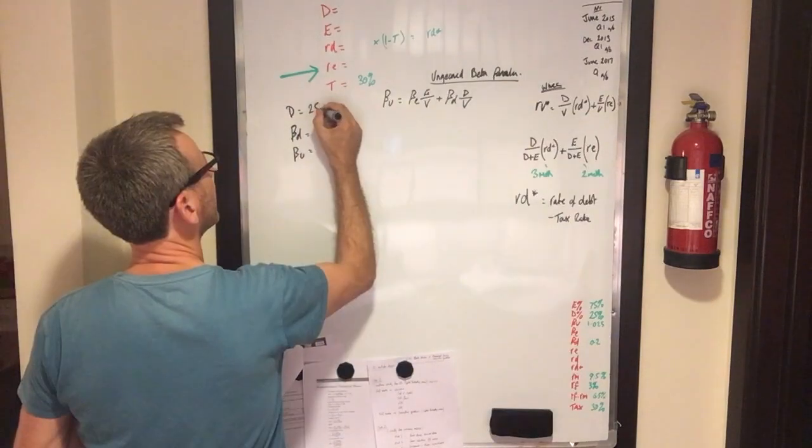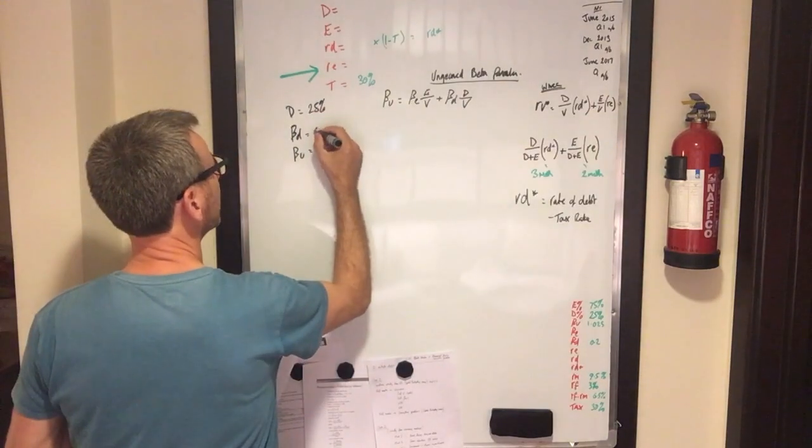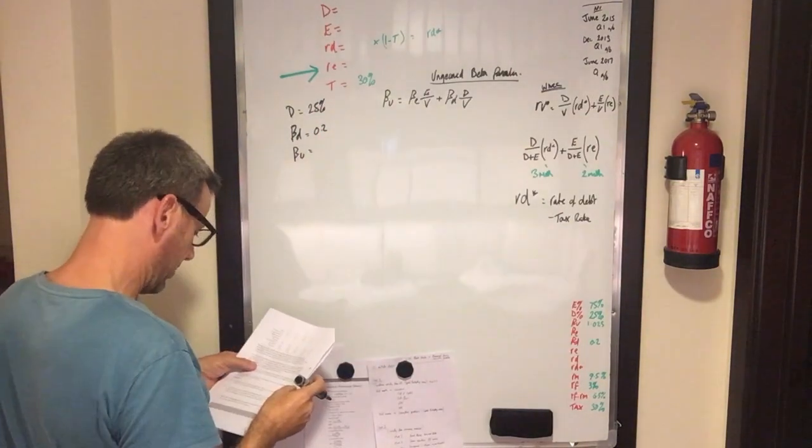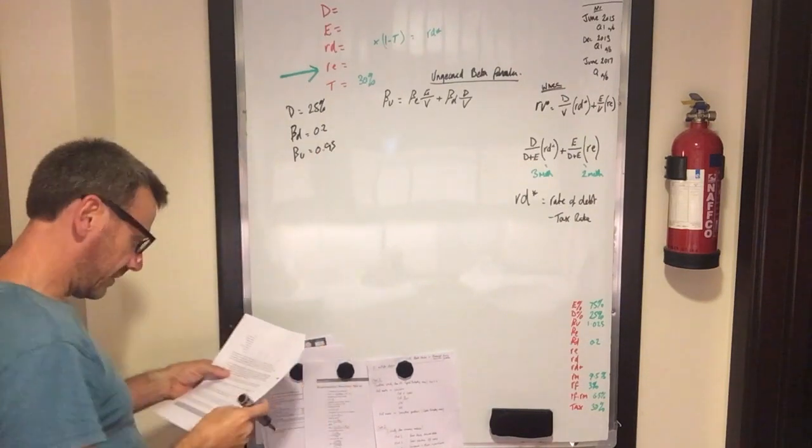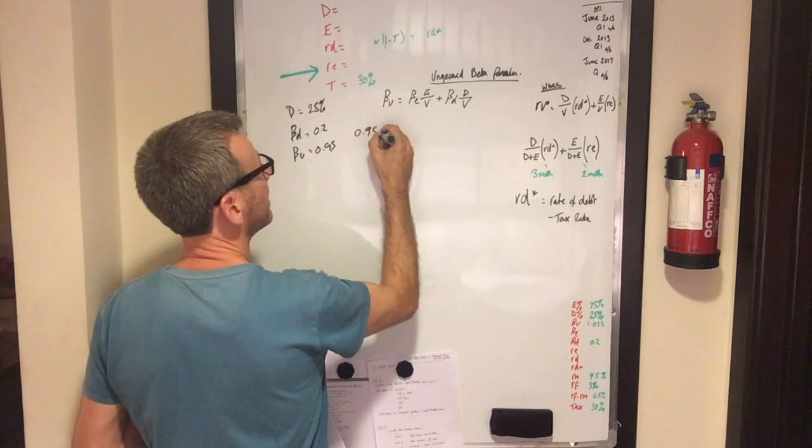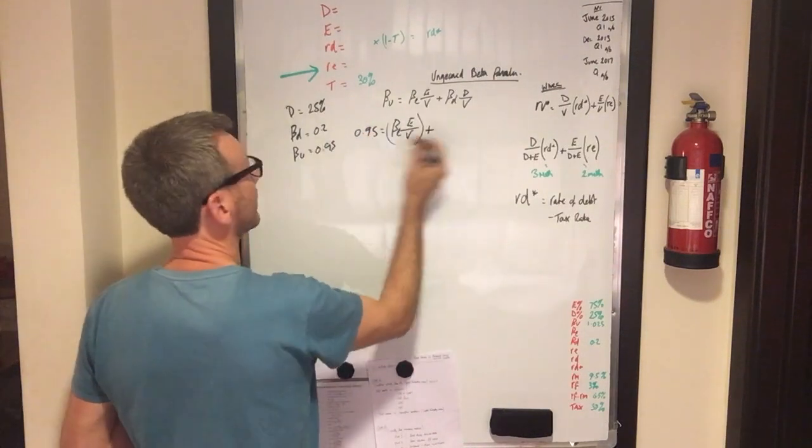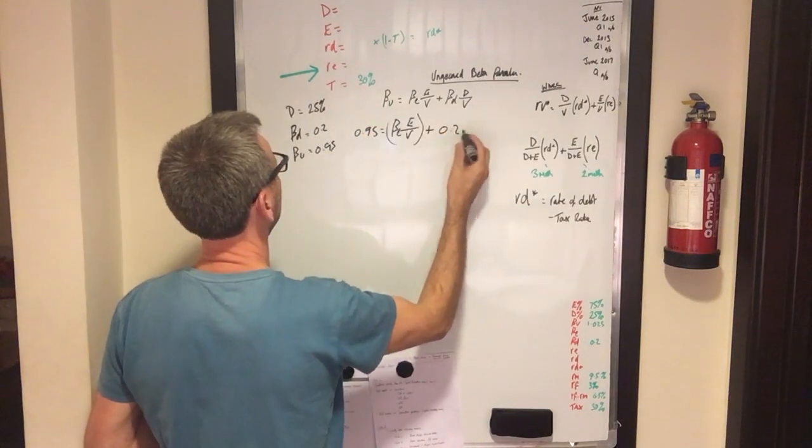So our debt rate is 25% debt, beta is at 0.2, and our ungeared beta is at 0.95. So we've got 0.95 plus our beta debt, which we know, which is 0.2.